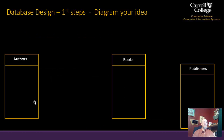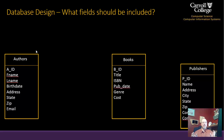Next, we start diagramming. My main entities are authors, books, and publishers. For authors, I have a primary key AID, plus first name, last name, birth date, address, state, zip, and email. For books, BID is the primary key, with title, ISBN, publication date, genre, and cost as a currency field. For publishers, PID is the primary key, with name and address. These are the initial fields to start with.